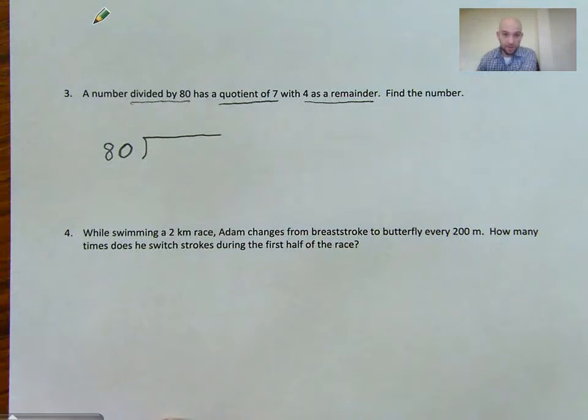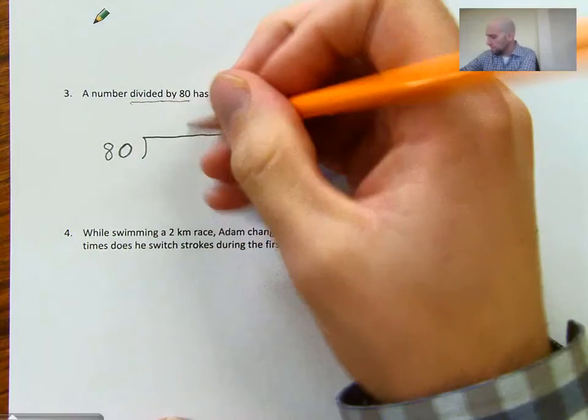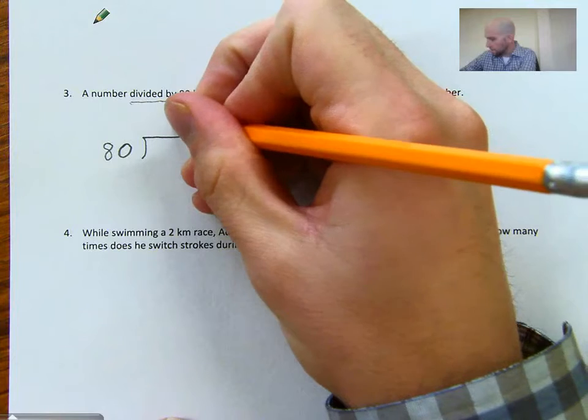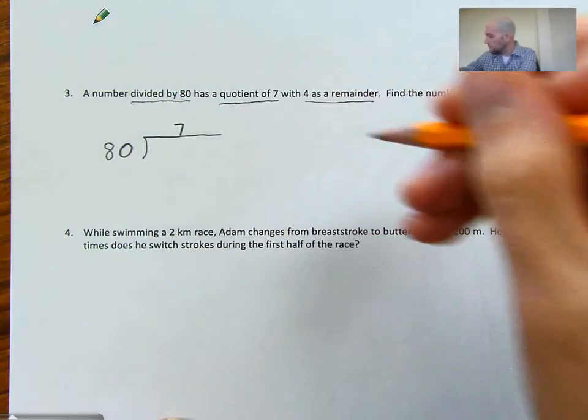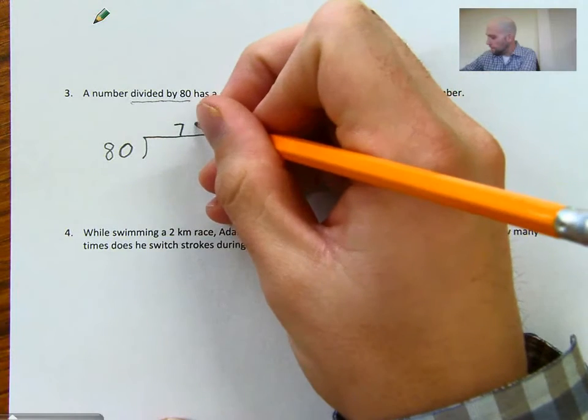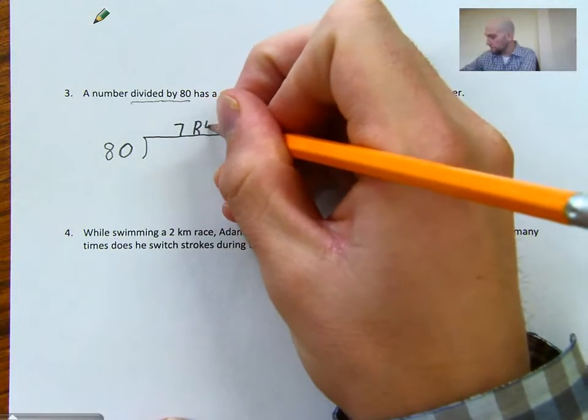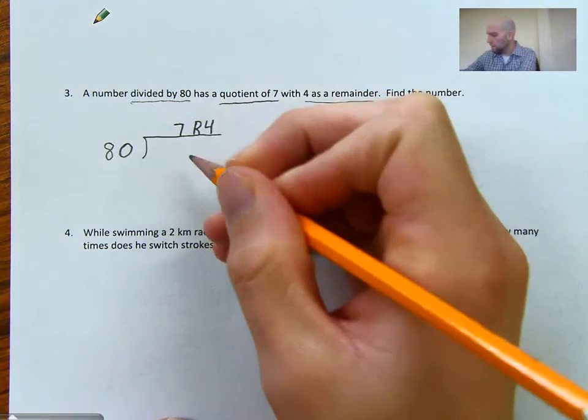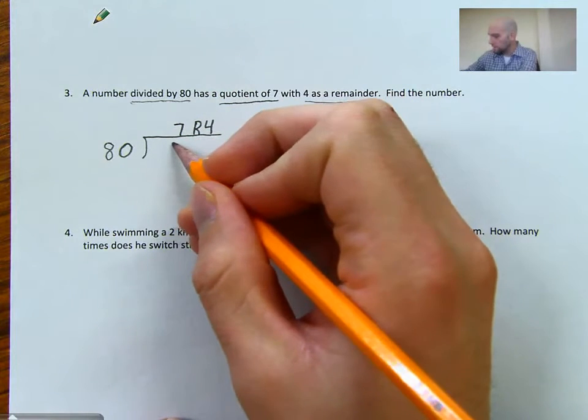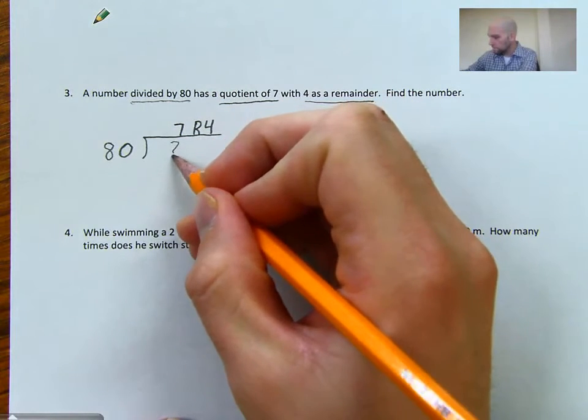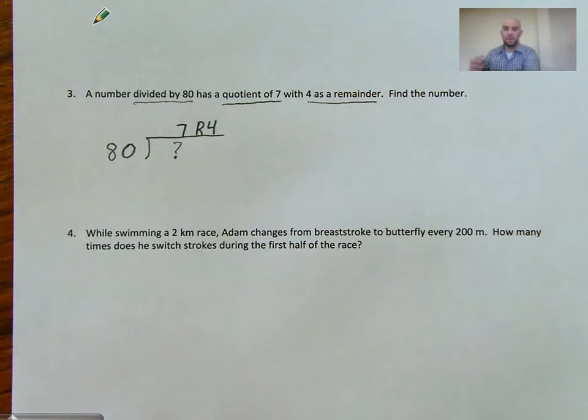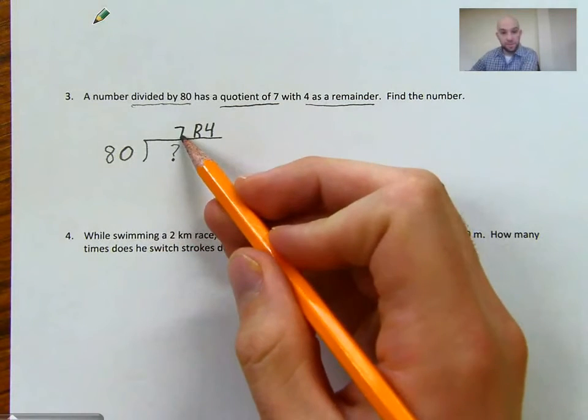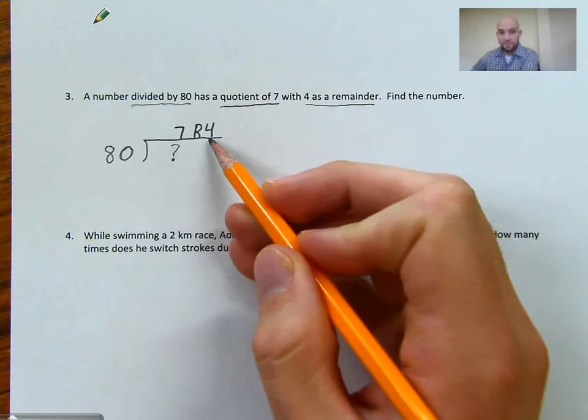Our quotient is our answer. Quotient is what we get when we divide our dividend by our divisor. We get 7 with a remainder of 4. So I want to know what this number is right here. How I can find that is the same way that we have been checking our work. So I can multiply 80 times 7, and then add 4.